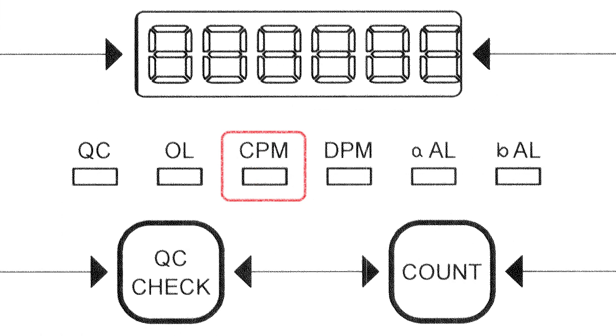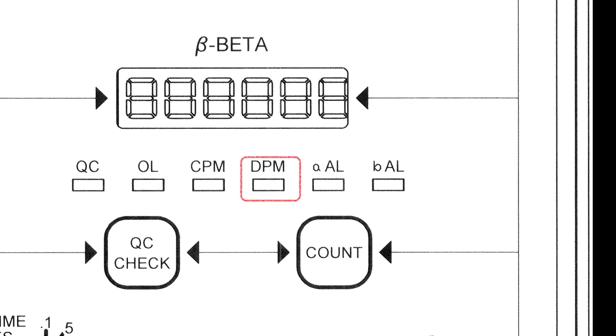A CPM light which is a green LED indicator that illuminates when the CPM mode is enabled. A DPM light which is a green LED indicator that illuminates when the DPM mode is enabled.